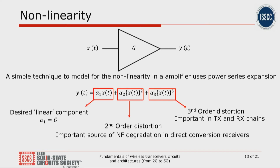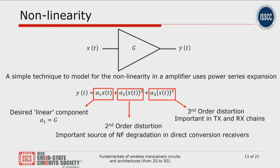With this brief introduction to noise, I'll now move on to linearity. The linearity of any amplifying block can easily be modeled using a power series expansion. We say that the output signal y(t) is a weighted sum of the input x(t) and higher order terms of x(t) as well. In this, the first term alpha_1 corresponds to the linear gain of the amplifier. Alpha_2 refers to second order distortion, which is a cause of noise figure degradation in direct conversion receivers. And alpha_3 is referred to as third order distortion, which commonly affects both the transmit and the receive chain.